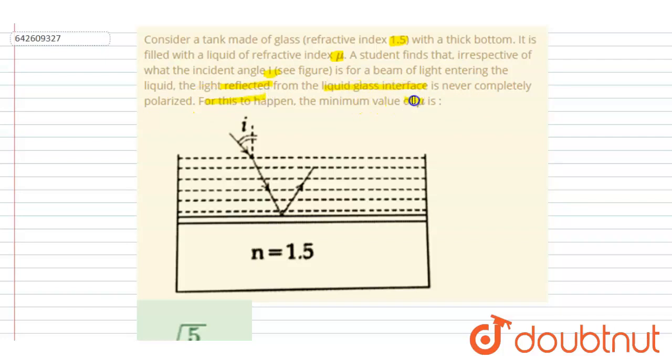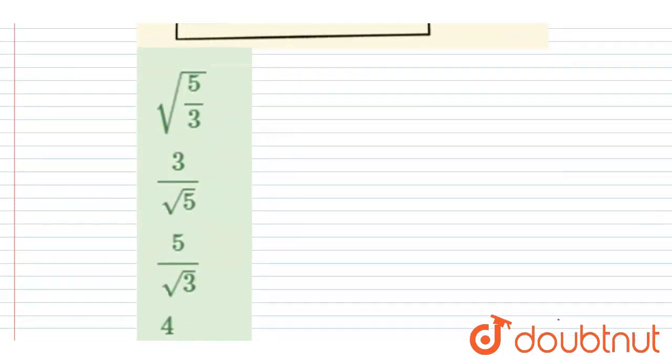For this to happen, the minimum value of mu. So it is said that it never completely polarized light, right? So what is the condition for light to never be polarized? So let's suppose I take two angles.